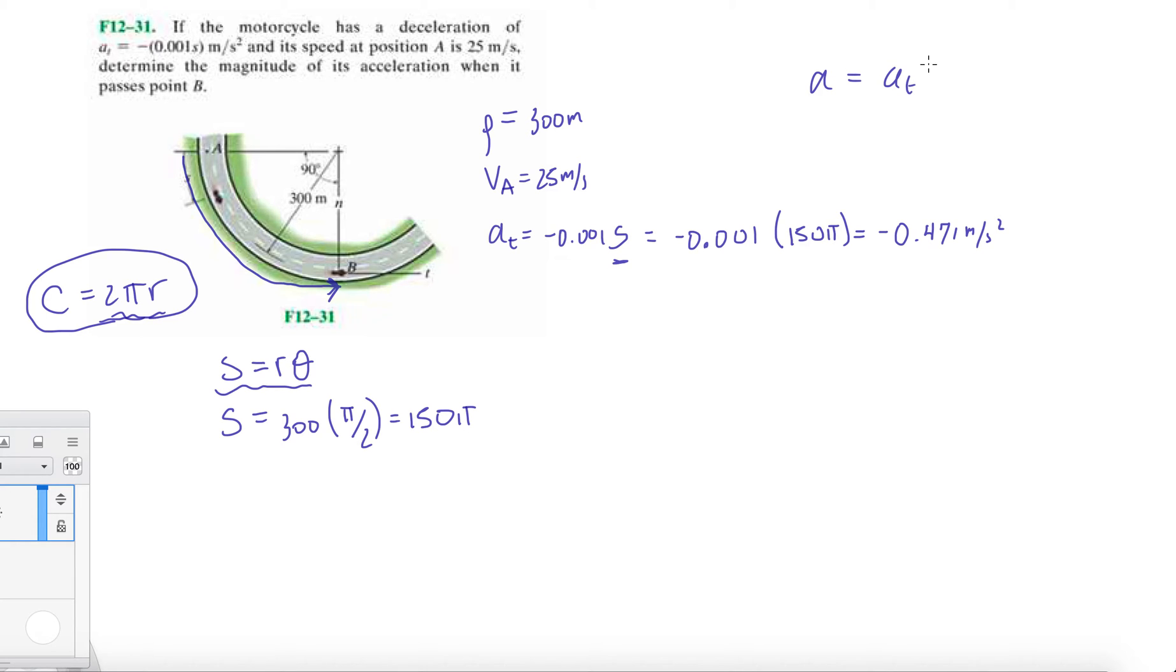We have one slice of this because we're trying to get a squared equals aT squared plus aN squared. Now, if you think you know how to proceed, pause the video and try it yourself. To get the normal component we know it's v squared over rho, so it's vB squared over 300. Here's our problem: we need to calculate vB.